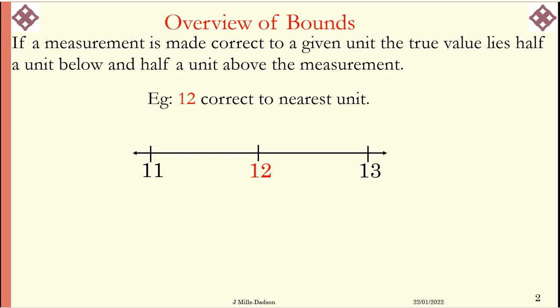For example, if 12 is correct to the nearest unit, you need to find out the possible numbers below 12 that could be corrected to 12, and possible numbers above that could also be corrected or rounded down to 12.